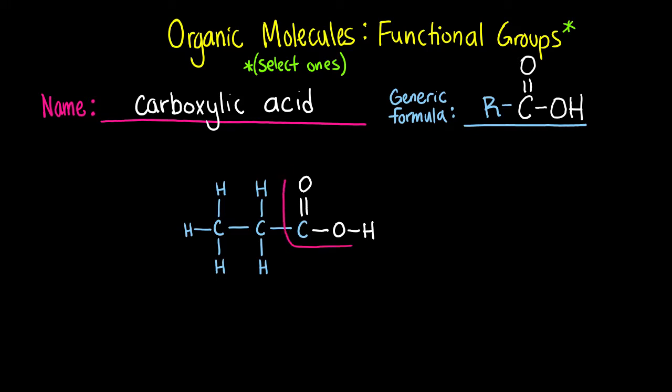The carboxylic acid can be seen here. The name of this compound would be propionic acid. The IC acid is a clue that it is a carboxylic acid.